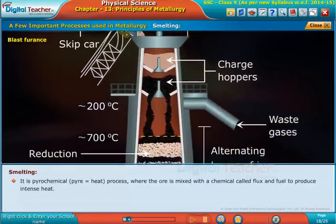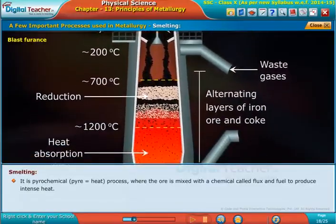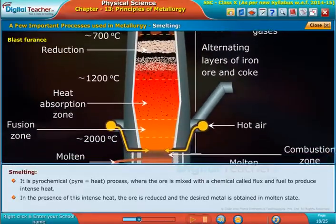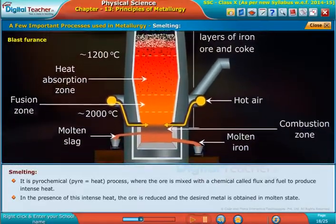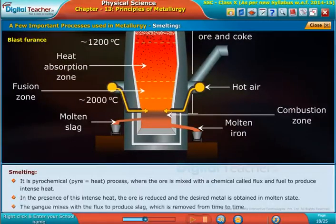Smelting: It is a pyrochemical process where the ore is mixed with a chemical called flux and fuel to produce intense heat. In the presence of this intense heat, the ore is reduced and the desired metal is obtained in molten state. The gang mixes with the flux to produce slag, which is removed from time to time.